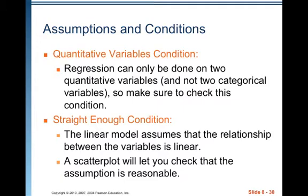Straight enough condition. The linear model assumes that the relationship between the variables is linear. A scatterplot will let you check that the assumption is reasonable. Now, one thing I do want to point out, the scatterplot of the data should look like a line. The scatterplot of the residuals should look like a cloud. Sometimes students have a hard time and they misinterpret either a scatterplot of the data, thinking that it should look like a cloud. No, it should look like a line, or at least show a consistent increase or consistent decrease. And the scatterplot of the residuals or residual plot should be the one that's just like a random cloud of points.